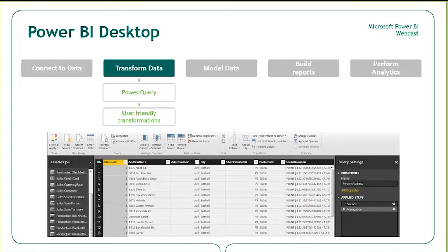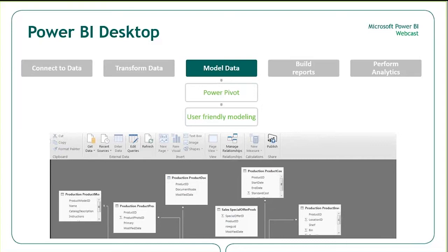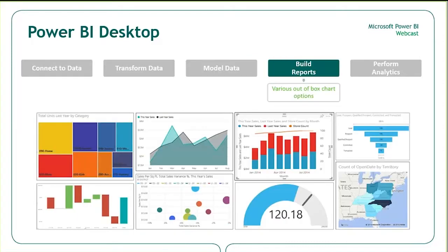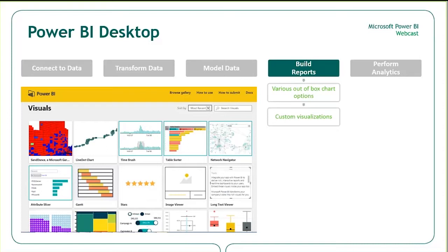Once the data is loaded into the desktop application, users can transform it using the same kind of interface as Power Query — user-friendly transformations. They can then model it in the way they would have in Power Pivot using drag-and-drop relationships. Once they've got that model to a point they're happy with, they can build reports on top of it. There are various out-of-the-box chart options including tree maps, bubble charts, and mapping capability. Something pretty interesting is the ability to use custom visualizations — visualizations developed by community members using Microsoft's open-source platform, offering an endless possibility for custom reporting.